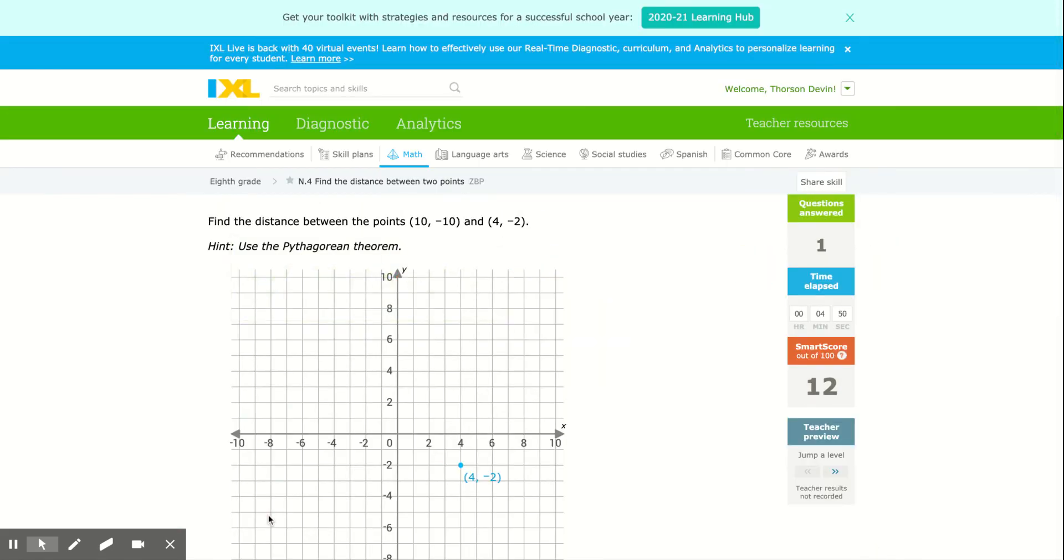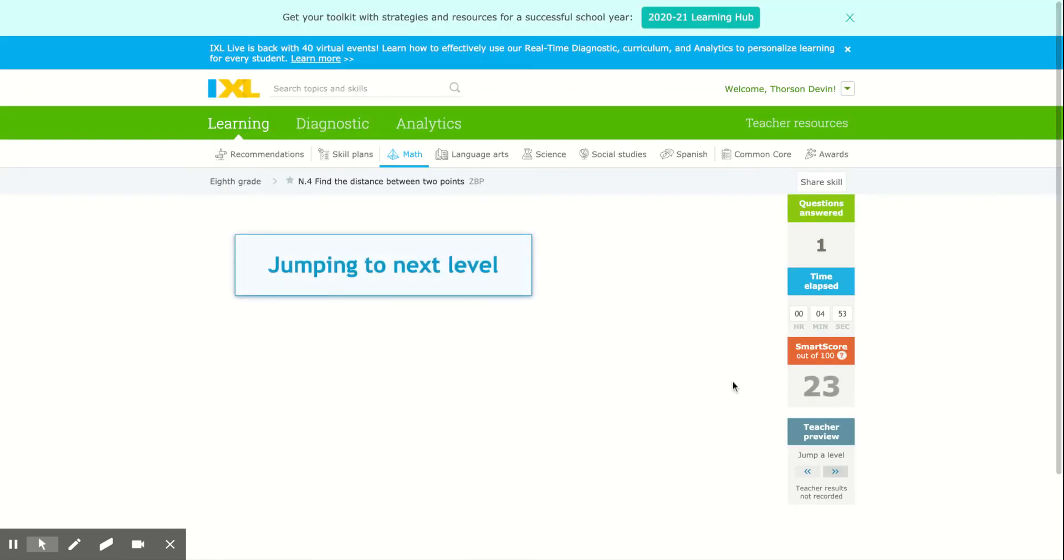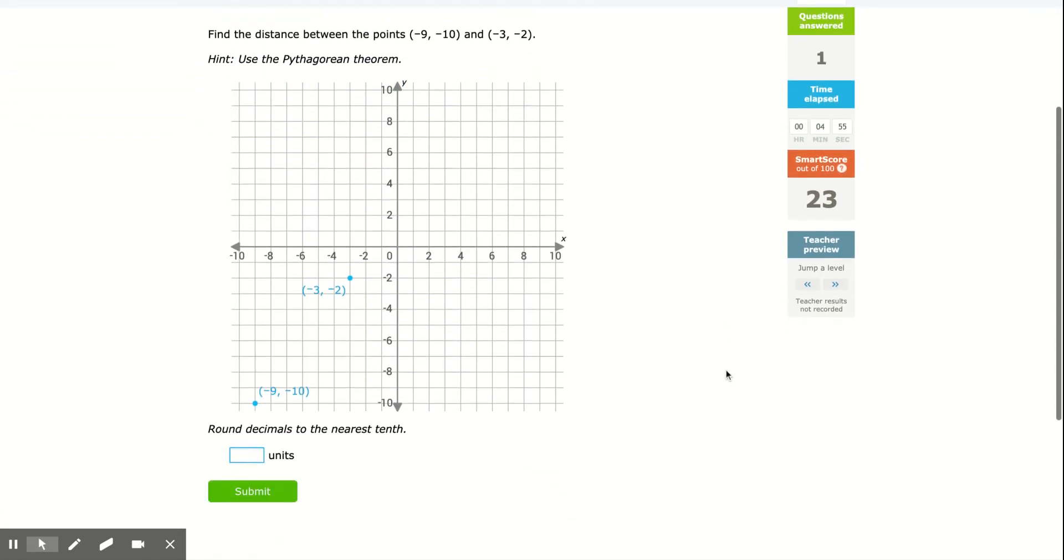I'm going to do another one. I'm going to jump ahead because eventually they're going to give you some that aren't graphed—you actually have to do without a graph. But let's do one more with the graph. Again, from the highest point, I'm going to drop a line straight down. From the lowest point, I'm going to bring a line straight over. I want to find this straight line distance between the two points. We find the distance of the horizontal line and the vertical line.